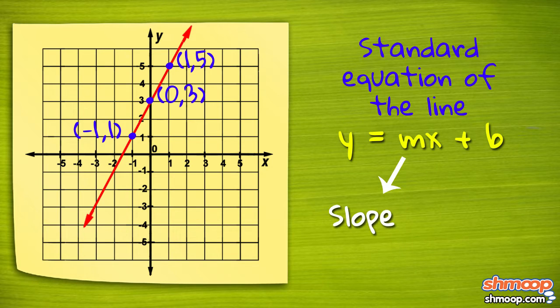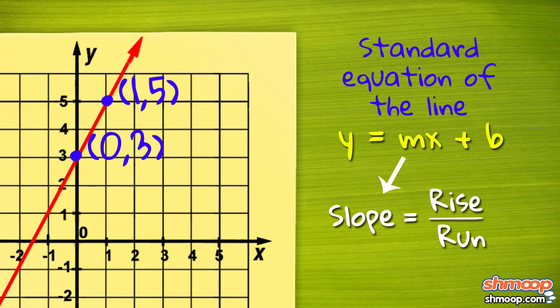To calculate m, the slope, we need to find the rise and run between two points on the line. Let's use two of the points we know are on the line: point (0,3) and point (1,5).